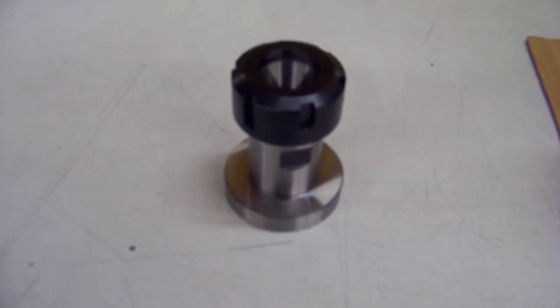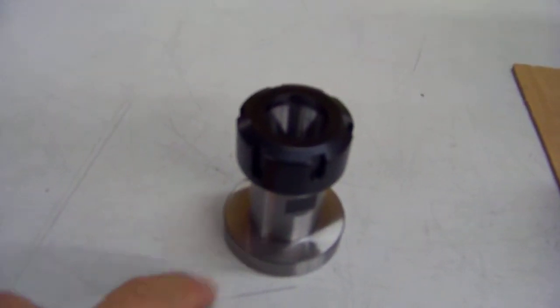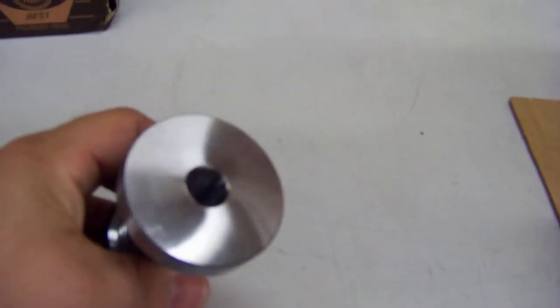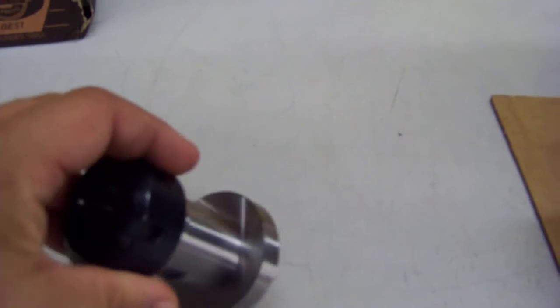Auto Drill Custom ER32 collet chuck with a ring on the back. This is a one-piece construction to go onto a J33 taper.